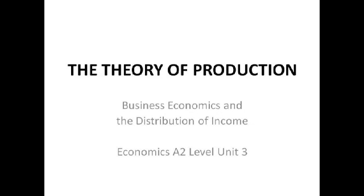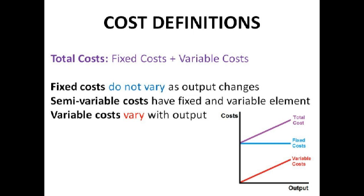Hello, this is a video about the theory of production section of business economics and the distribution of income. The section of economics A2 level, unit 3. We're going to start this section by looking at some of the costs that are faced by firms in the short run. So this is costs of production.